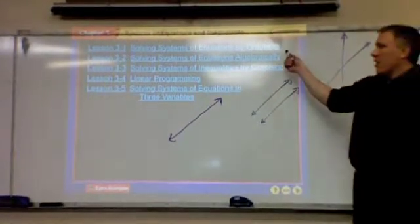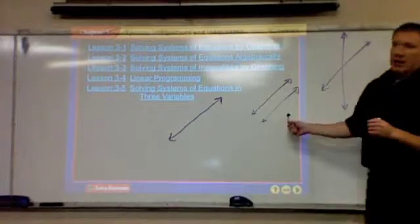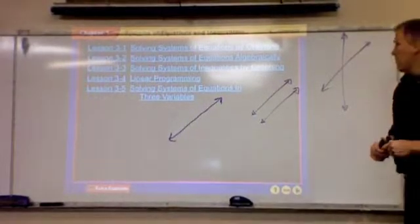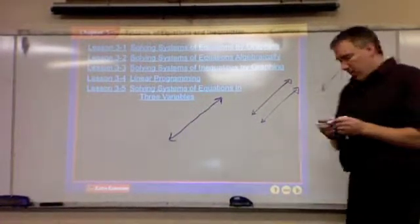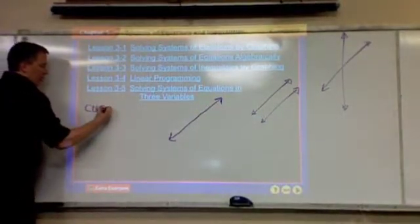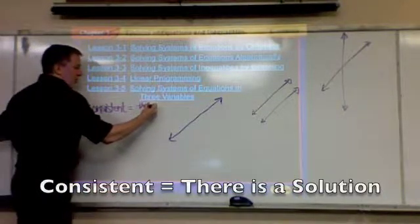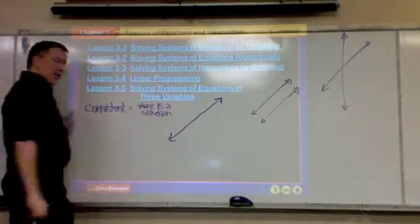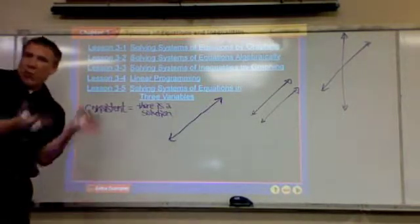When we're doing lessons 3-1 and 3-2, because they're both about lines, you're either going to have one answer, no answers, or infinitely many. There are words to describe this. The word consistent means that there is a solution — there's some place that the lines have in common. The solution is what they share.